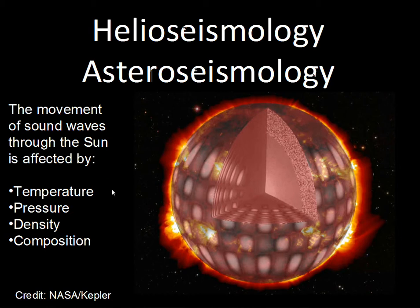These sound waves that travel through the Sun can reveal information about four main aspects. Waves travel at different speeds depending on temperature, so observing how waves propagate through the Sun's interior gives information about temperature. The sound speed also depends on pressure, density, and composition, so these four quantities produce observable effects at the photosphere, giving astronomers information about conditions inside the star.